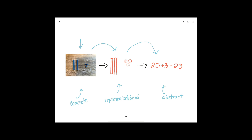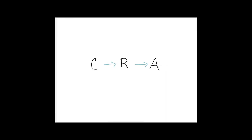However, this way of viewing the CRA model — moving through it like a sequence of steps — can lead to some pretty big problems for students. The first problem is this: often as teachers, we see abstract as the ultimate goal in this linear path. Our instinct is often to get to the goal as quickly as we can, so very often we rush through these first two phases — concrete and representational. Sometimes we might even rush through both in one lesson, and then it's on to abstract.